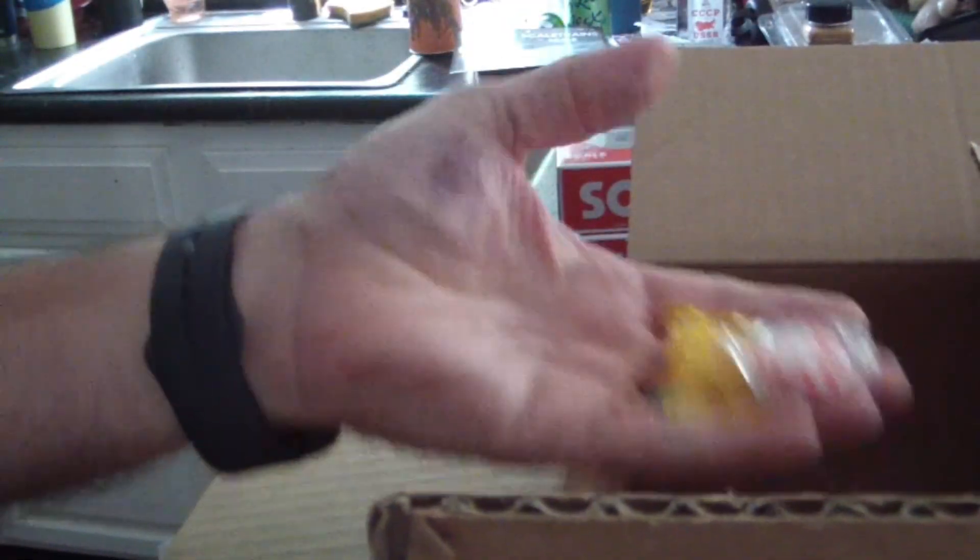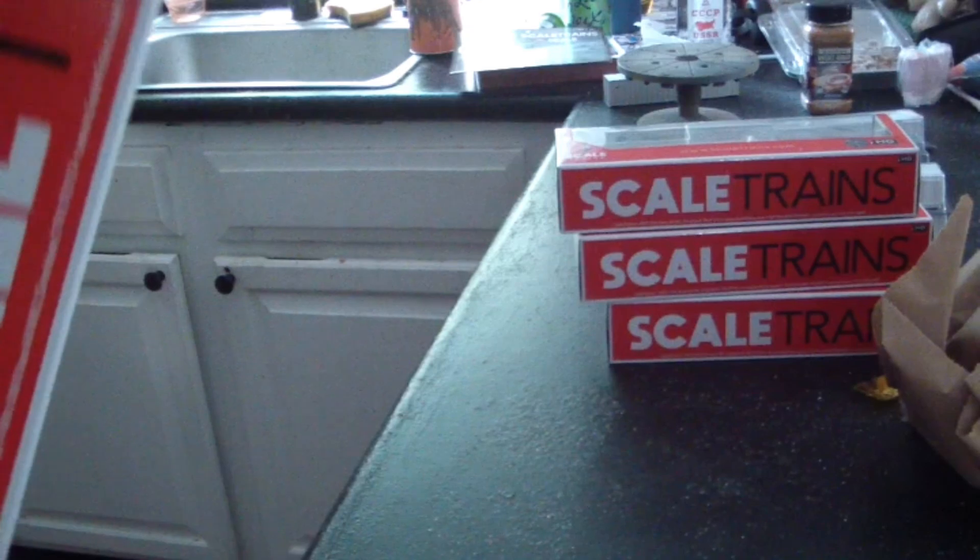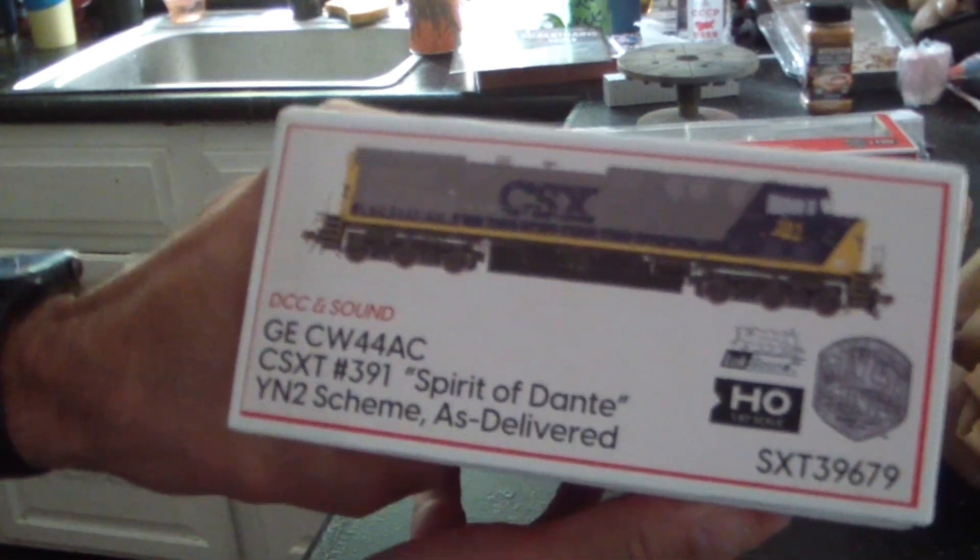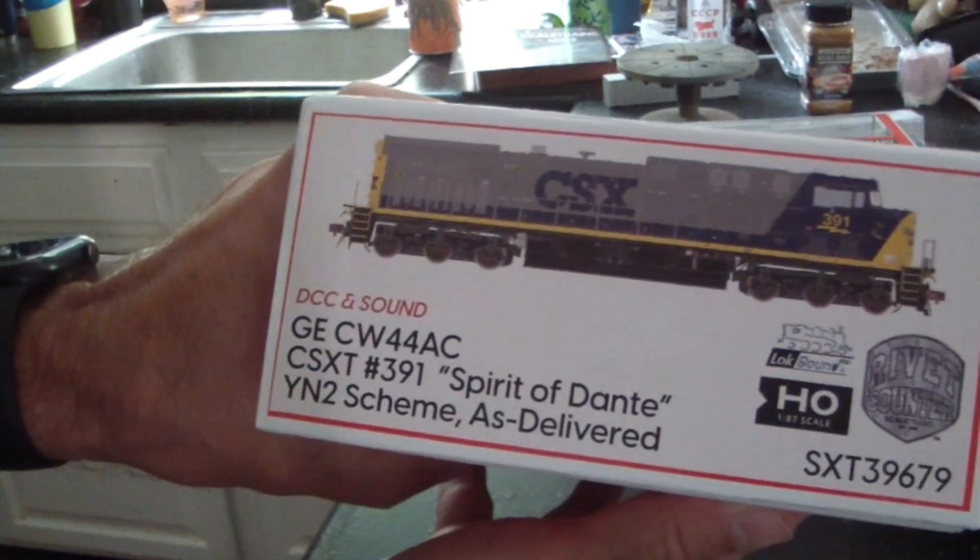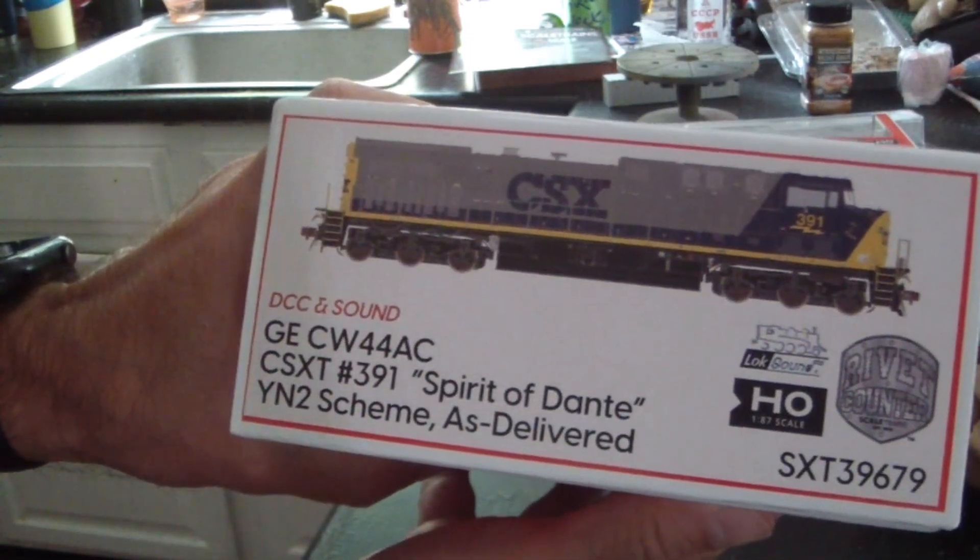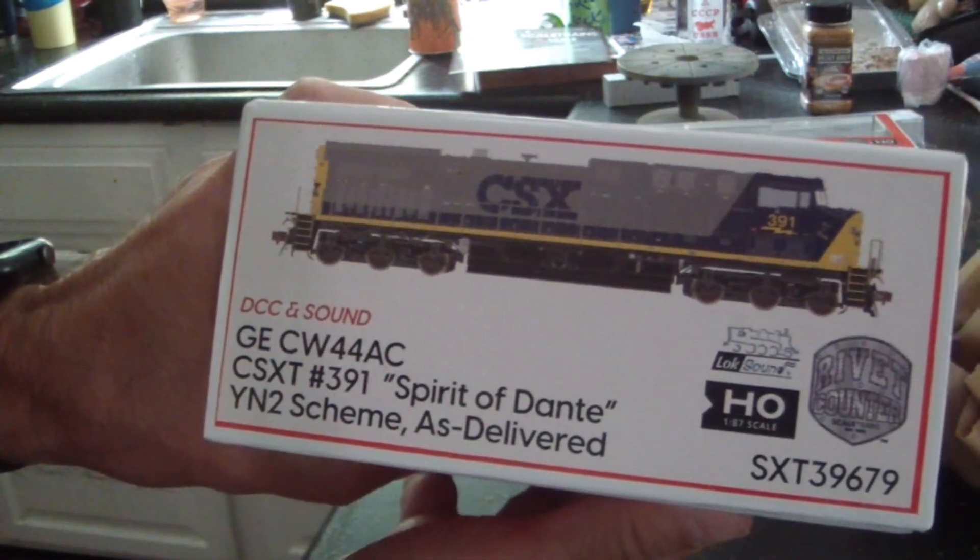And of course the famous Scale Trains candy. And last but not least, we have GE CW44AC CSX number 391 Spirit of Dante YN2 scheme as delivered.